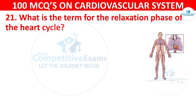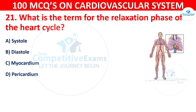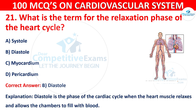Q21. What is the term for the relaxation phase of the heart cycle? Options are: systole, diastole, myocardium, or pericardium. The correct answer is B — diastole. Diastole is the phase of the cardiac cycle when the heart muscle relaxes and allows the chambers to fill with blood.